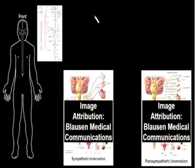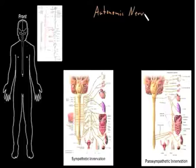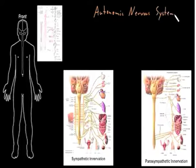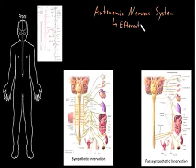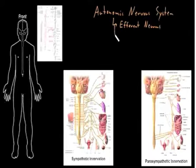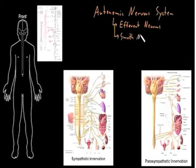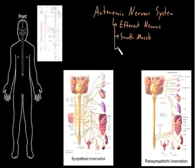The autonomic nervous system is part of the overall nervous system and represents a functional division, not a structural division like the central nervous system and peripheral nervous system. The autonomic nervous system consists of efferent neurons in the peripheral nervous system that control three different types of cells: smooth muscle cells, which are found in structures all over the body like around blood vessels; cardiac muscle, the muscle making up heart tissue; and gland cells.